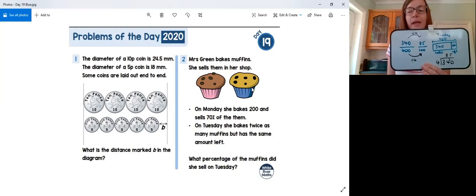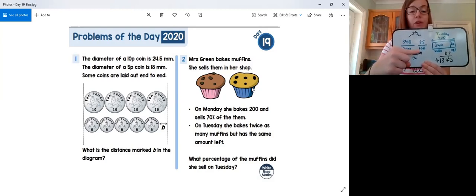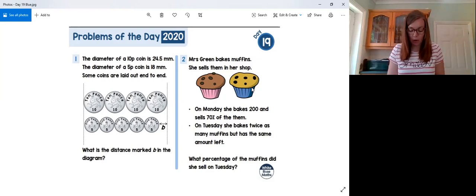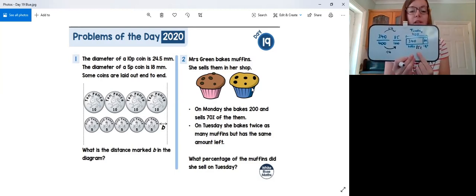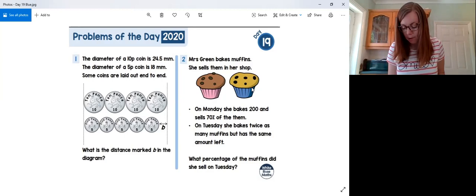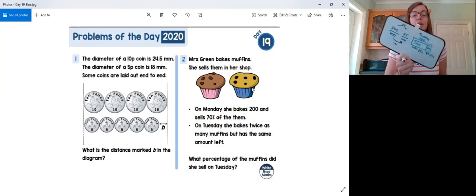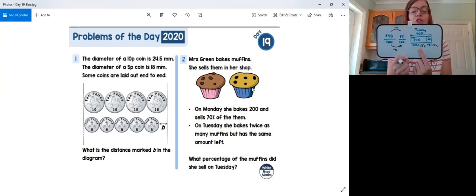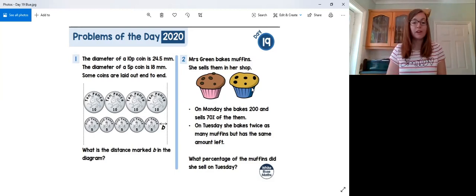So as a percent, it just means out of 100. So 85 out of 100 is 85%. So on Tuesday, we can see that Mrs. Green sold 85% of her muffins. Can you work out what percentage was left then as an added question? She must have 15% left if she sold 85%. Fantastic. And that is day 19 done as well. You guys have been working really, really hard on these. Just one lot of the problems of the day to go. Come back tomorrow to see that video. And I look forward to seeing you all very soon. Thanks very much. Bye bye.